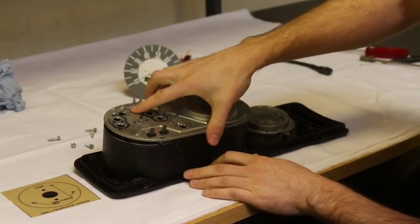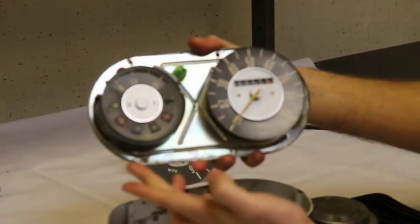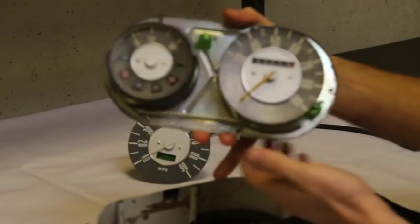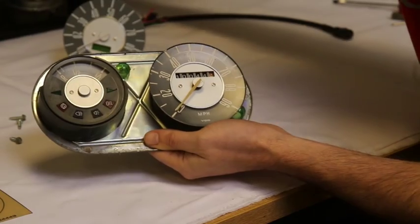Right, so with those five undone, you can lift down your fuel gauge and your original speedo. So for now what I'll do is I'll put the dash pod at the back here.